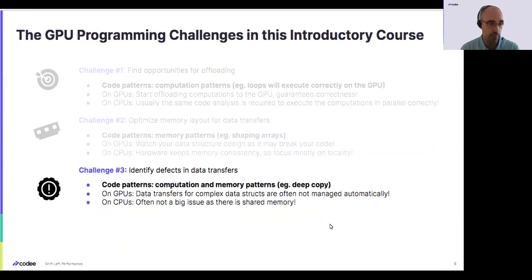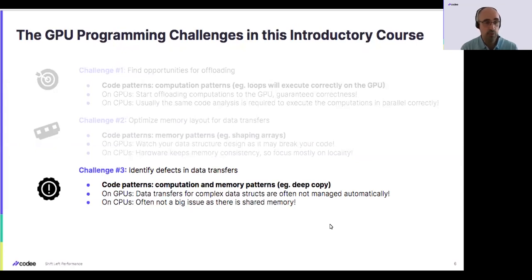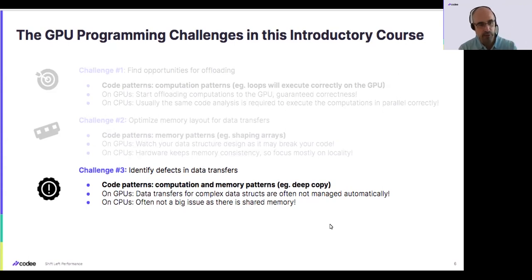From the challenges we saw yesterday — identifying opportunities — we know the importance of array shaping and of selecting a coding structure to represent matrices, and how this impacts the way we manage data transfers. Today we will see how data transfers, due to the selected data structure, can be incorrect even though they look correct. This is related to the well-known problem of deep copy: copying complex structures built with pointers and navigating those pointers to correctly move all data from CPU memory to GPU memory.